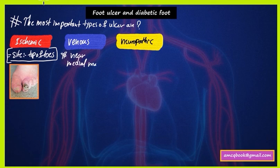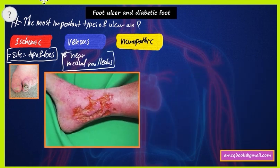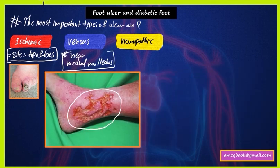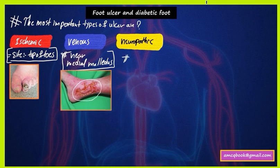The second type is venous ulcer. The most common site of venous ulcer is near the medial malleolus, as shown in this picture. This is very important to remember.